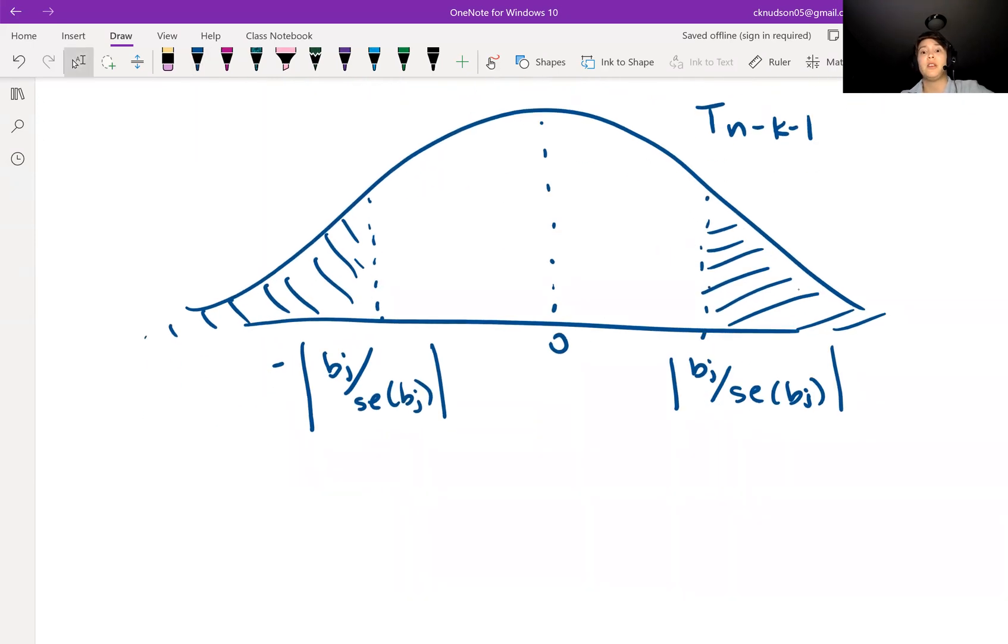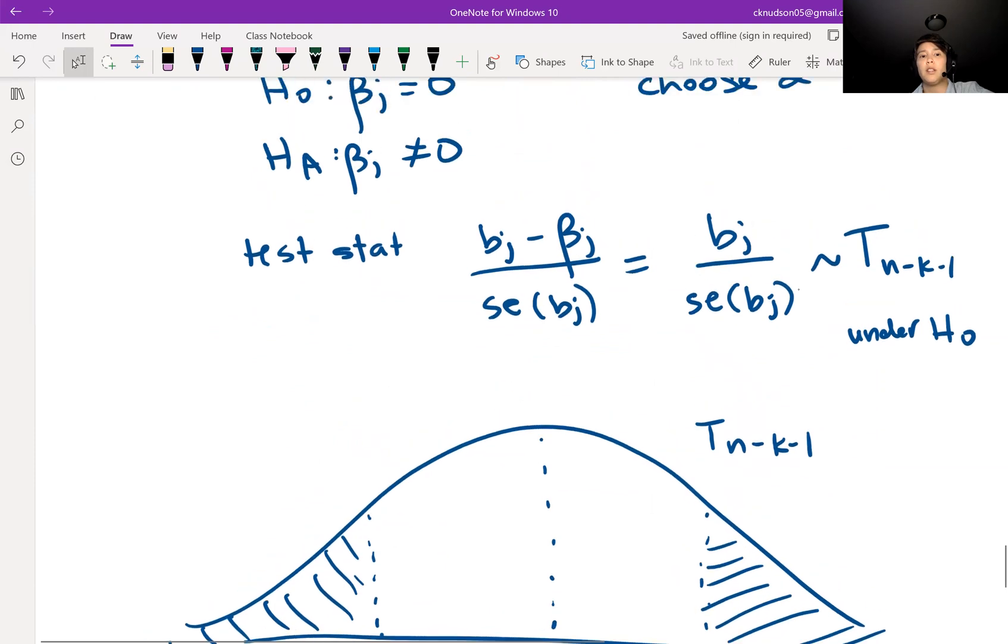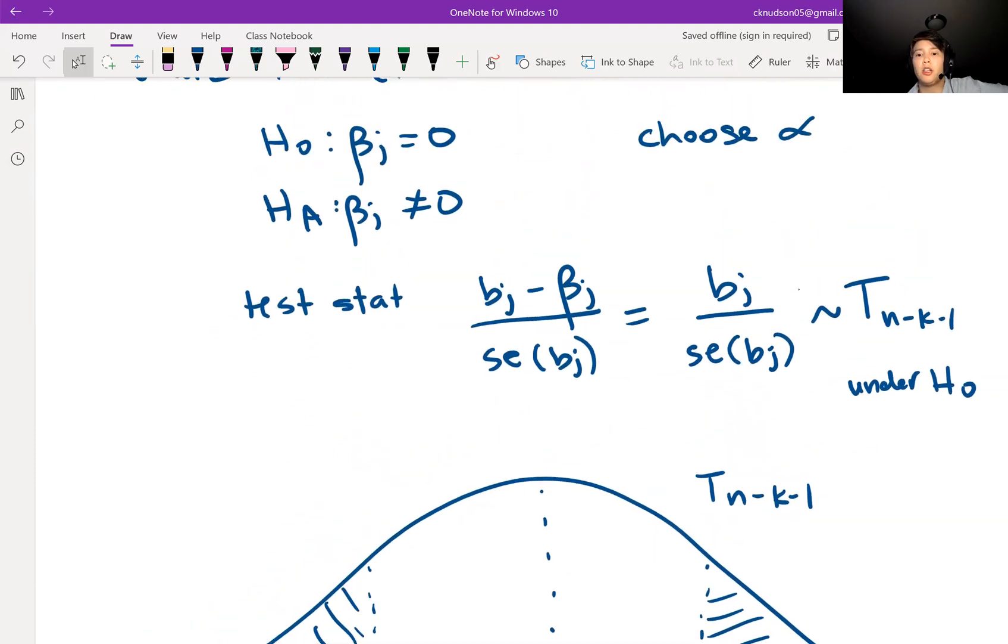So this is how you would conduct a Wald test for component beta J.